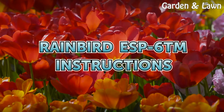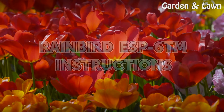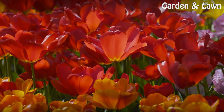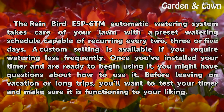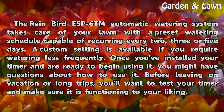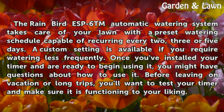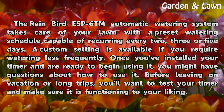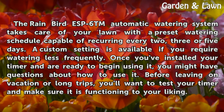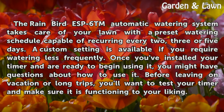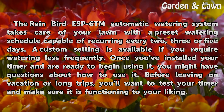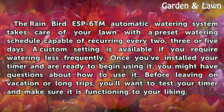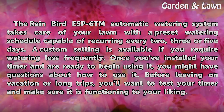Rainbird ESP-6TM Instructions. The Rainbird ESP-6TM automatic watering system takes care of your lawn with a preset watering schedule capable of recurring every 2, 3, or 5 days. A custom setting is available if you require watering less frequently.